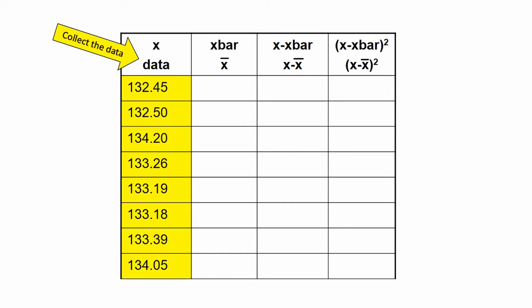This is the standard deviation equation. To solve for standard deviation, we first collect data from the population. Let us say in a population of eight steel rods, we measure their lengths in inches and list each of them under the X data column. It is best to tabulate the information like this so we can easily solve for the components of the standard deviation equation.